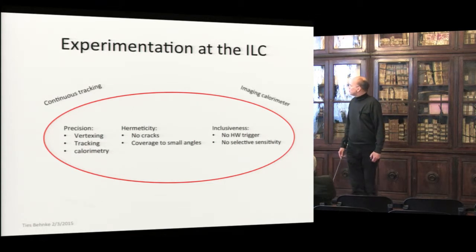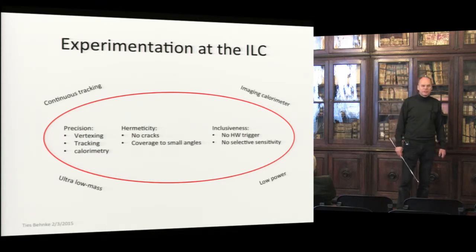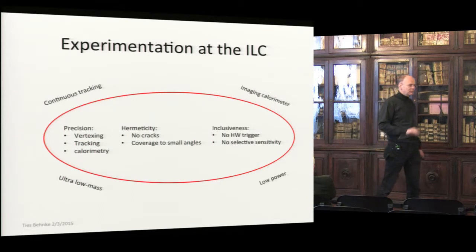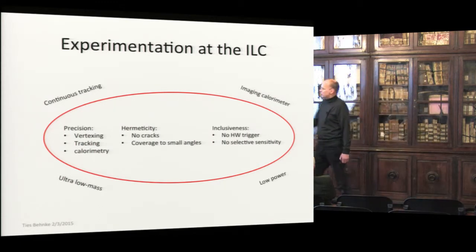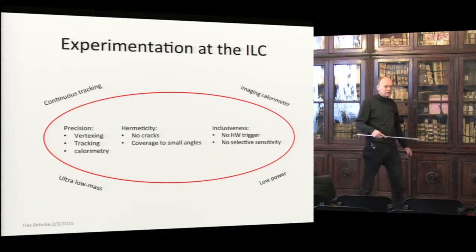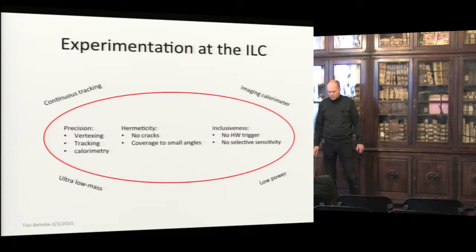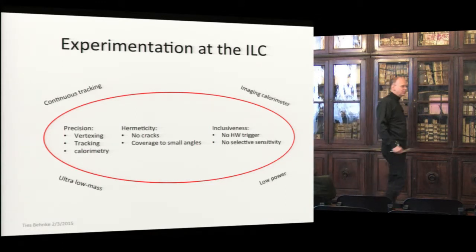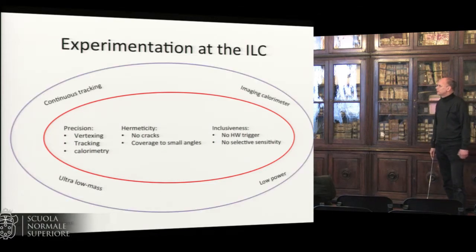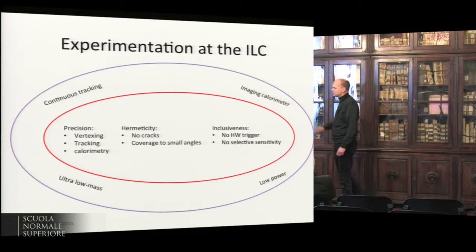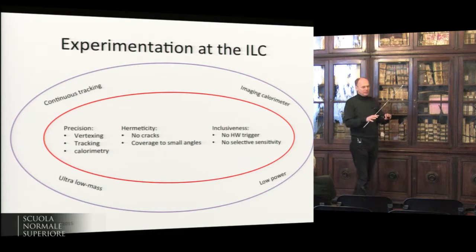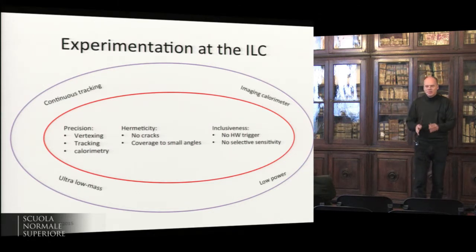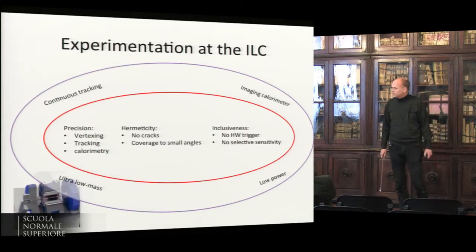This implies continuous tracking with no dead time, an imaging calorimeter that can disentangle individual particles in the final state including within showers, and ultra-low mass — which is essential for excellent tracking, excellent vertexing, and avoiding flooding your calorimeter with conversions. You also want low power, because only with low power can you achieve low mass; otherwise you pipe in so much copper it becomes impossible. Designing such an integrated detector is a real challenge — the detector concept is more than the sum of its parts.